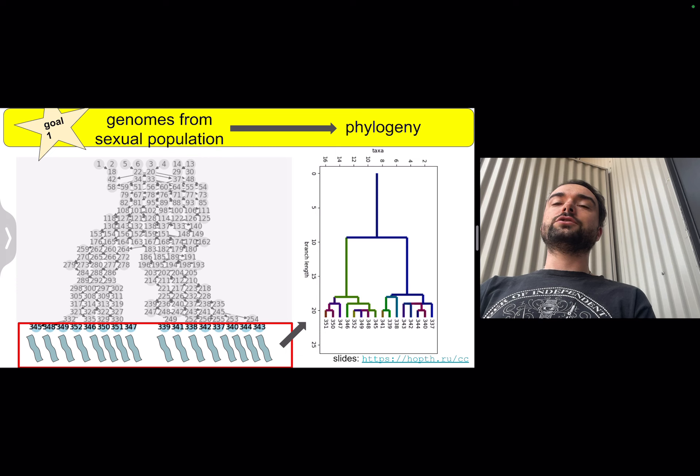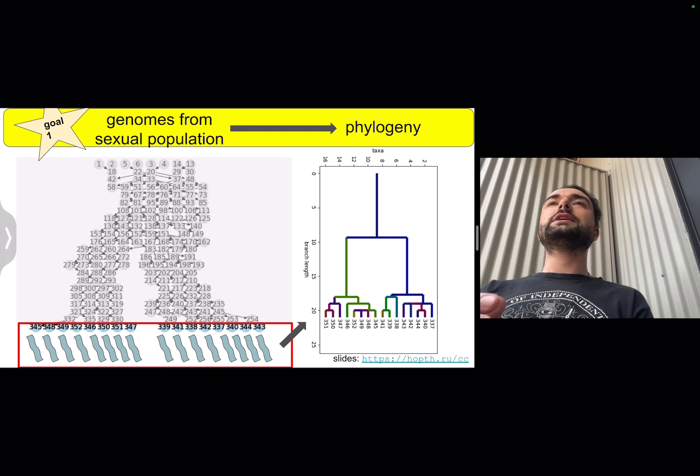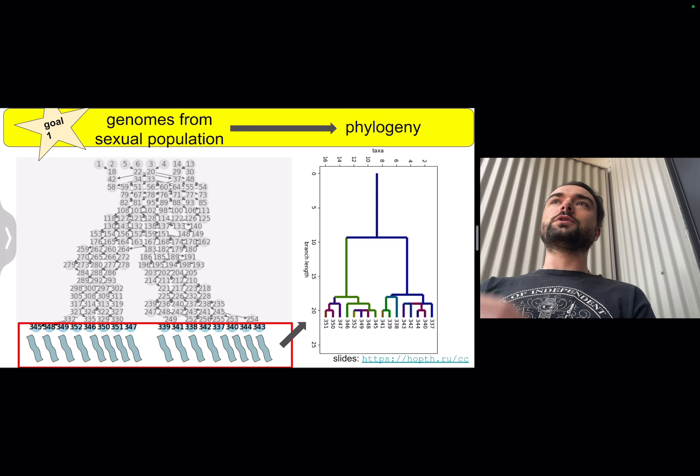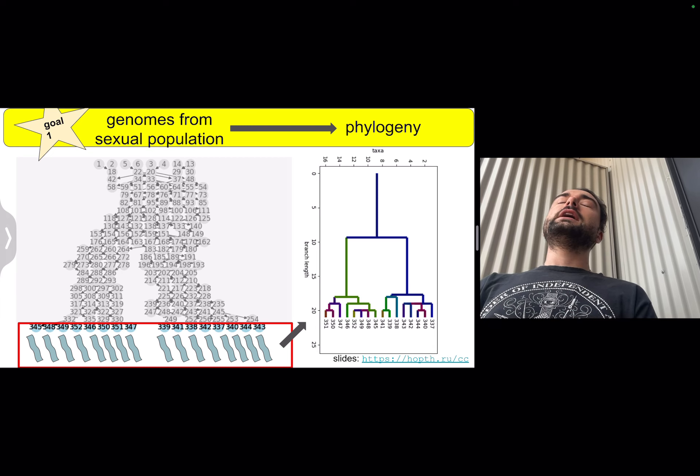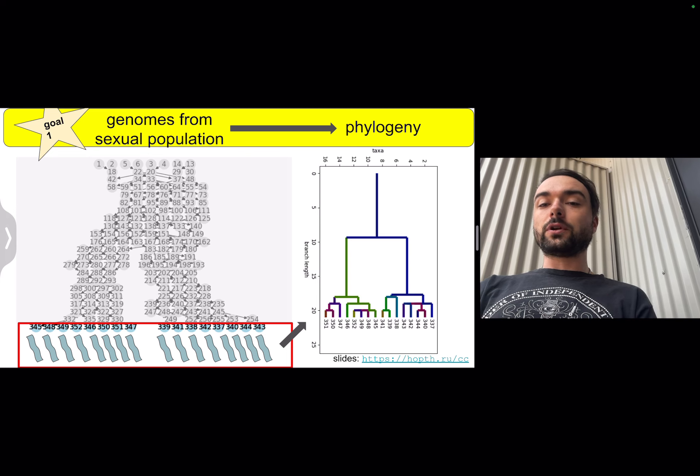All right, so we've figured out how we want to work with an asexual population. How do we extend this to work with sexual populations, where instead of having one parent, each offspring has two parents and it creates this reticulated, directed acyclic graph structure.